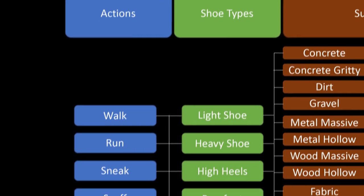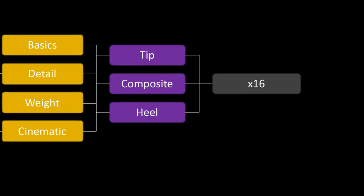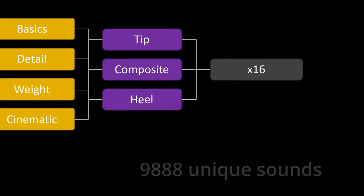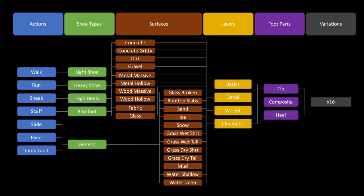For example, with footsteps we have 48 projects, seven different actions per footstep category — per shoe or on a generic surface — and then 16 variations per action per shoe per surface. That totals up to 9,888 sounds if you render them, and there are even more source sounds in the projects because you have different microphone perspectives.